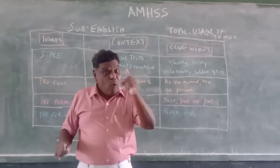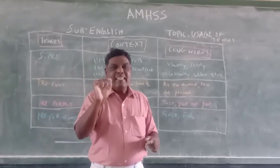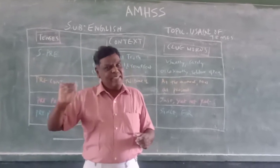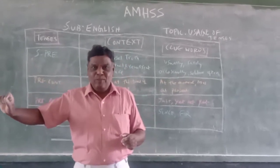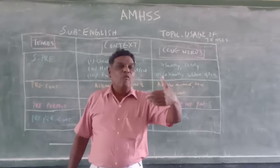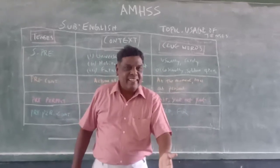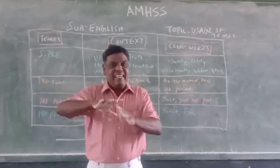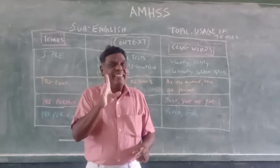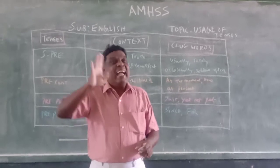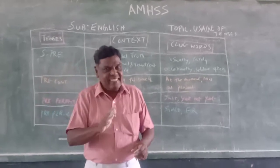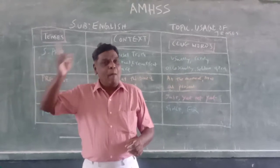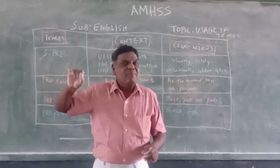Mohan was eating: was/were plus verb plus -ing — that is past continuous. Mohan will be eating: will be plus verb plus -ing — future continuous. Then perfect tense: Mohan has eaten — has or have plus past participle — that is present perfect.